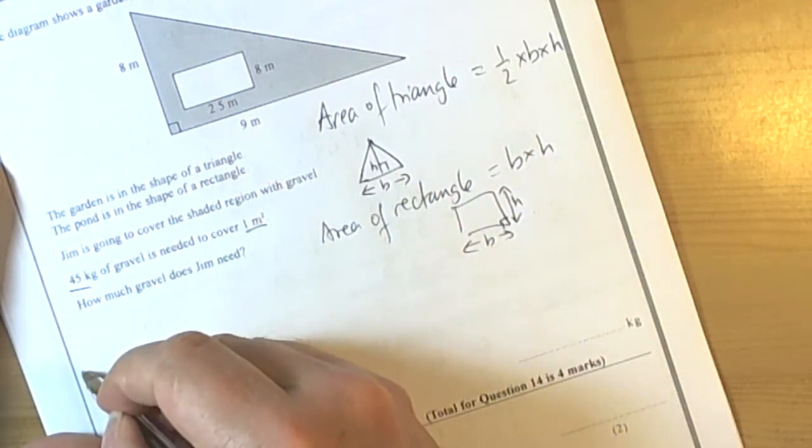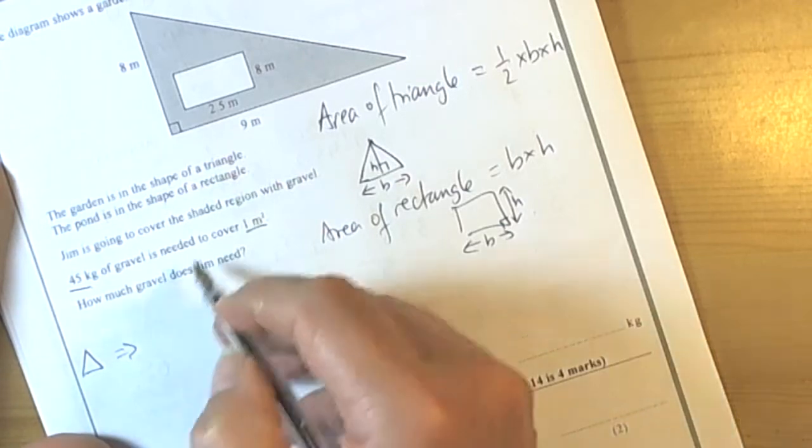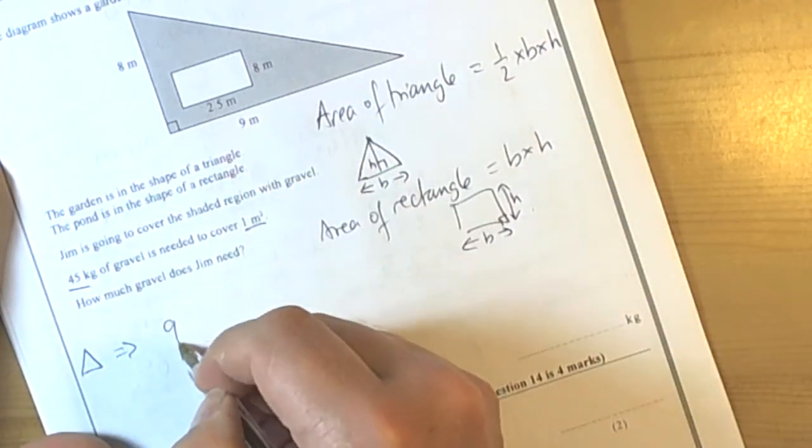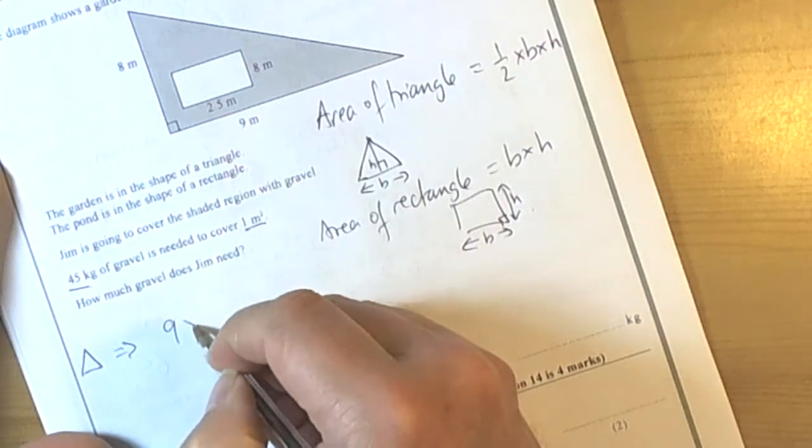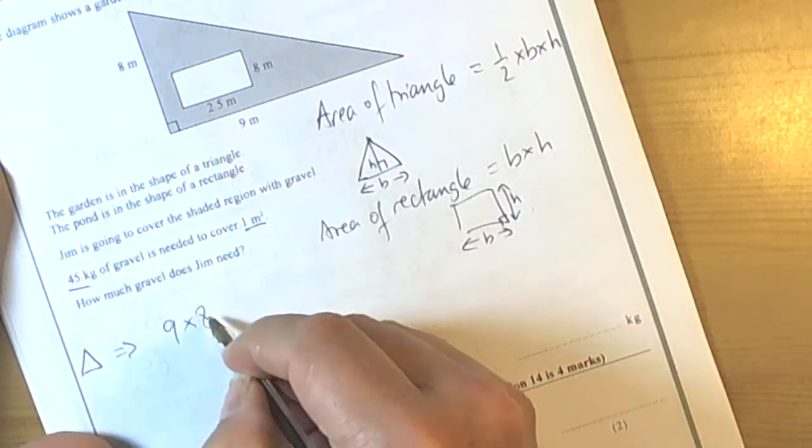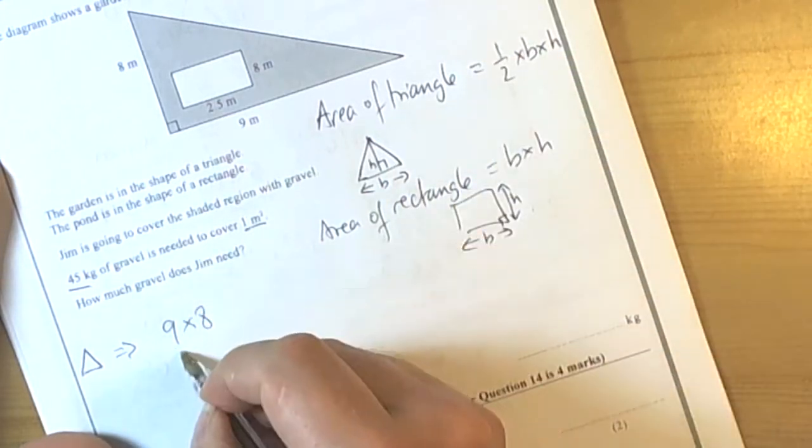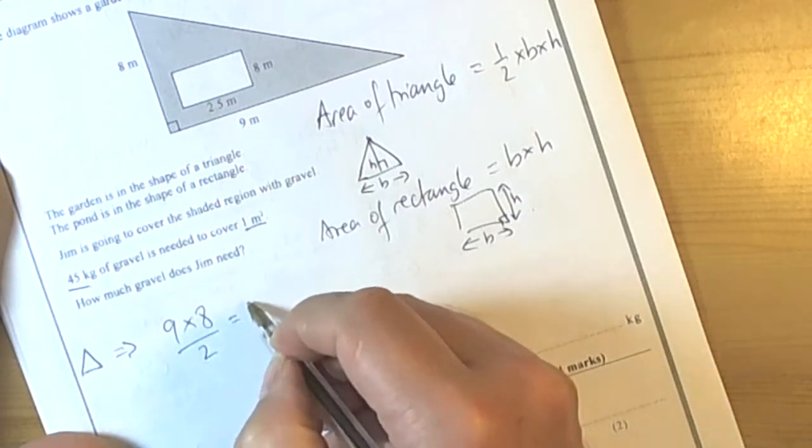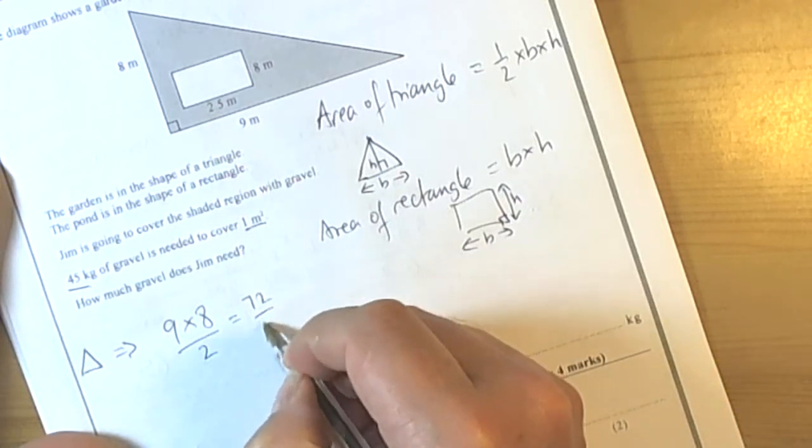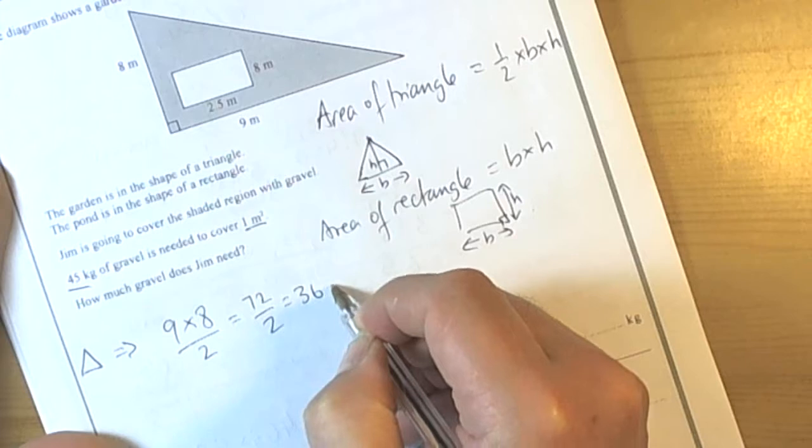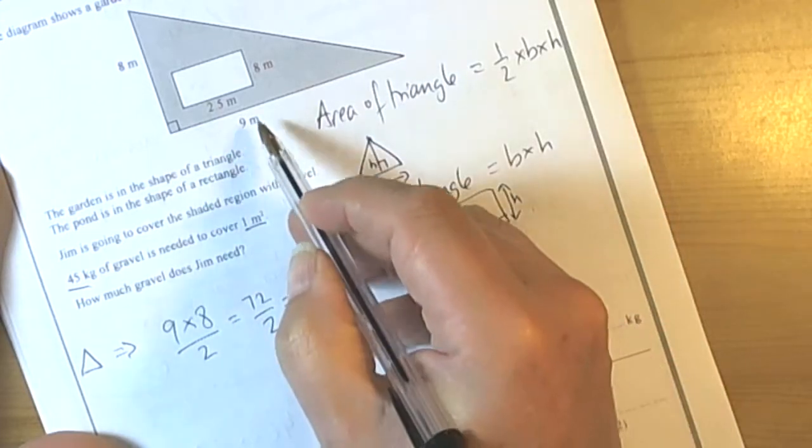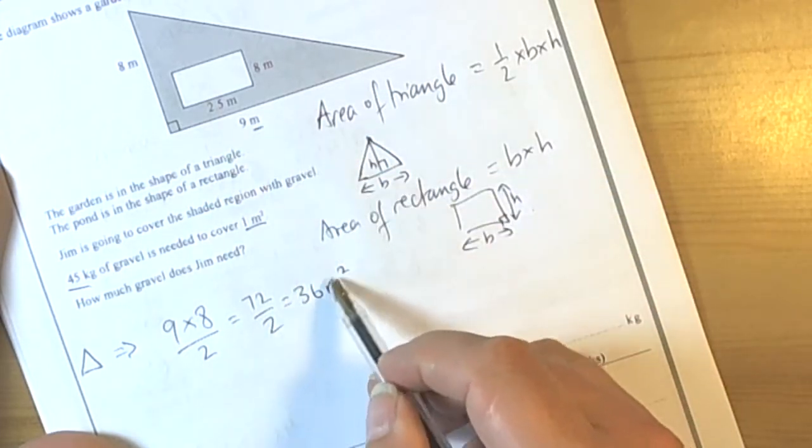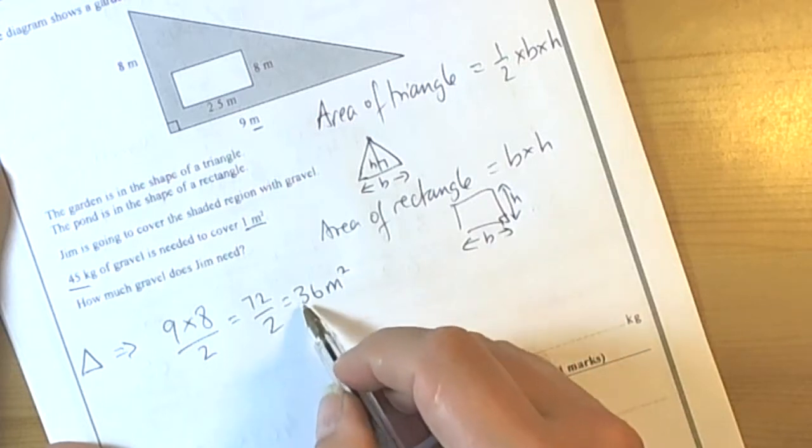For the area of the triangle we've got a base length of 9. We've got a vertical height at right angle so perpendicularly at 8. And we're halving which means we're divided by 2. So 9 × 8 is 72. Divide that by 2 is 36 square meters. Because we're dealing with meters, we're dealing with square meters as an area for units. So that's for the triangle.